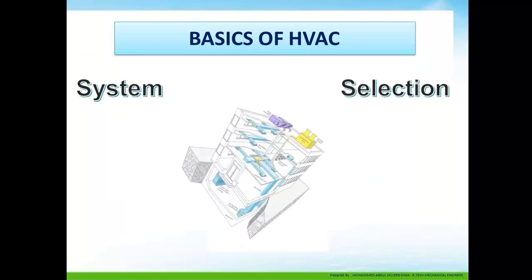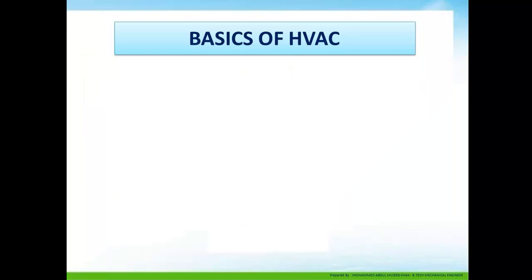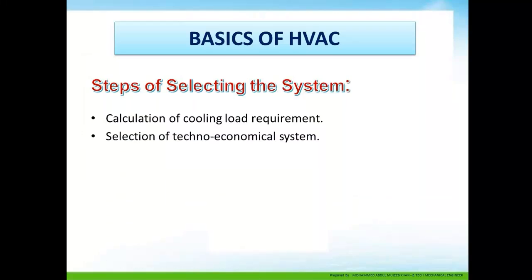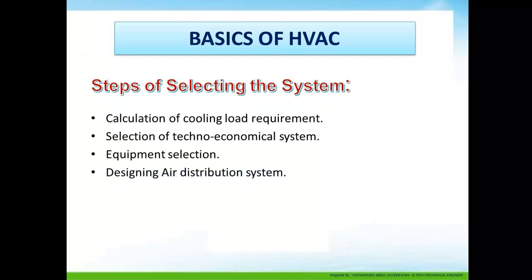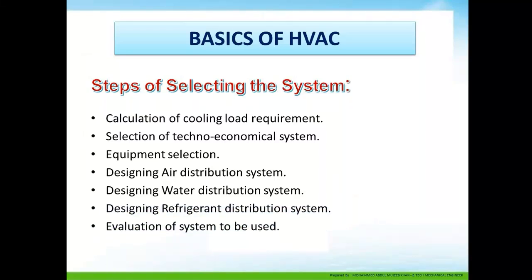System selection: how do we select a system? Steps for selecting a system include: calculation of cooling load required, selection of a techno-economical system, equipment selection, designing an air distribution system, designing a water distribution system, designing a refrigerant distribution system, and evaluation of the system to be used.